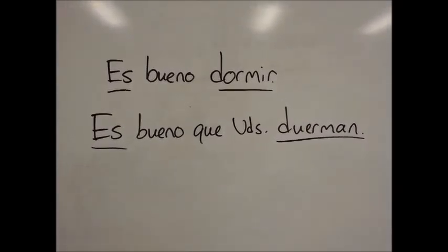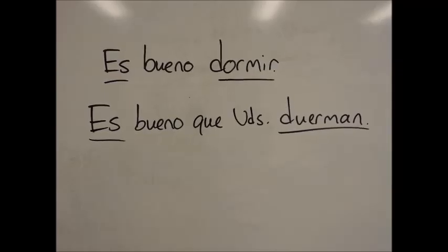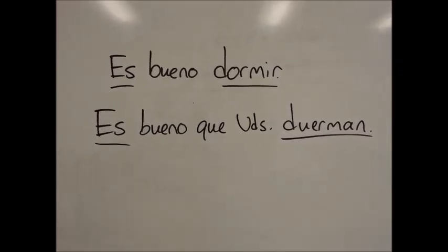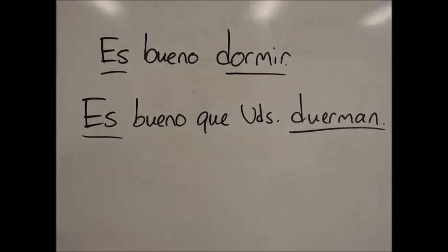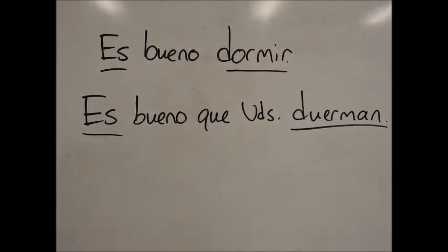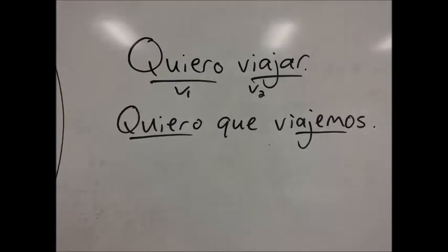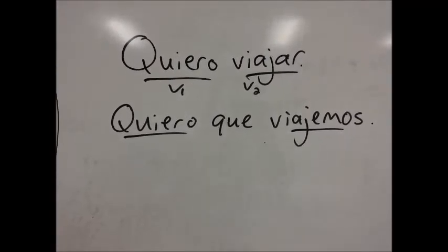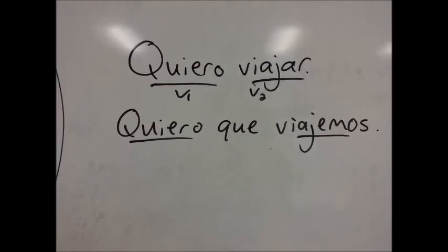Now here's an example with a type 2 verb, ser o estar. In this case, it's ser. And honestly for G1s, it's pretty much always going to be ser. So we have es bueno dormir, it's good to sleep. There's not really a subject in any part of the sentence, so dormir stays in the infinitive. But if you have es bueno que ustedes duerman, there is a change in subject. So dormir becomes duerman in the subjunctive.